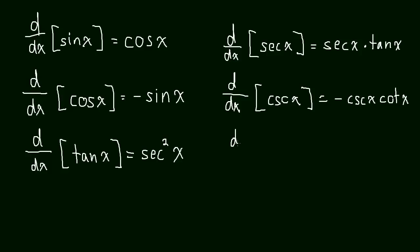And then the derivative of cotangent x, of cotangent x, is equal to negative cosecant squared x, or cosecant of x squared.